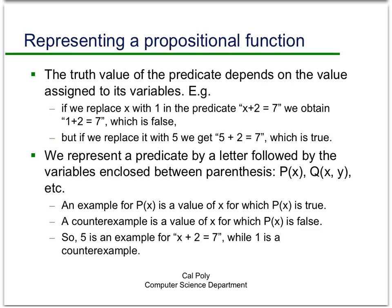To emphasize the point: the truth value of a predicate depends on the value assigned to its variables. For the propositional function x plus 2 equals 7, if we let x equal 1, then 1 plus 2 equals 7 is a false proposition. If we replace x with 5, then 5 plus 2 does equal 7, so the propositional function is true.